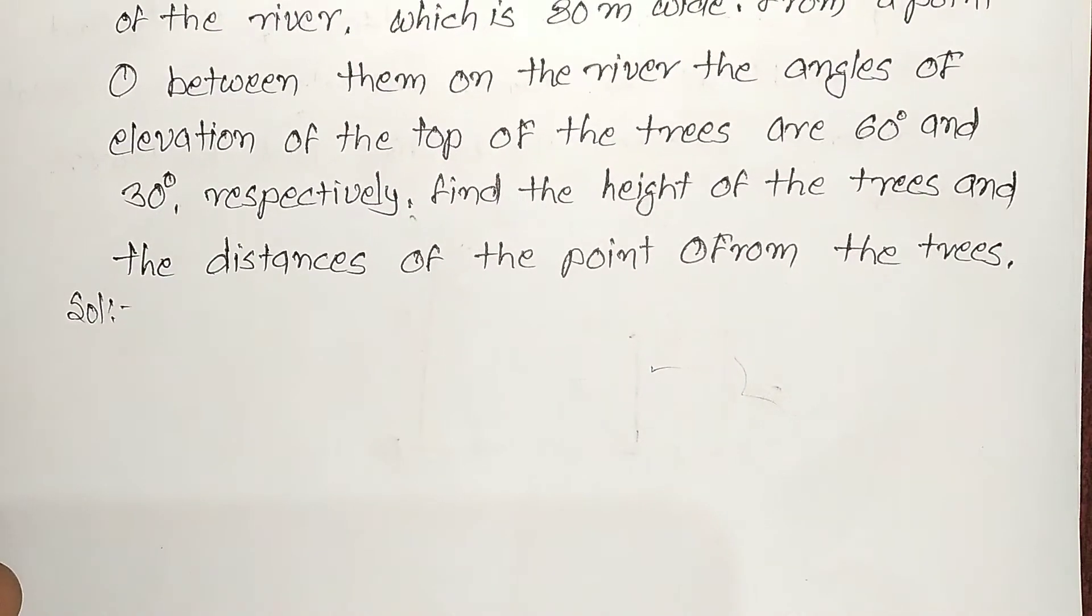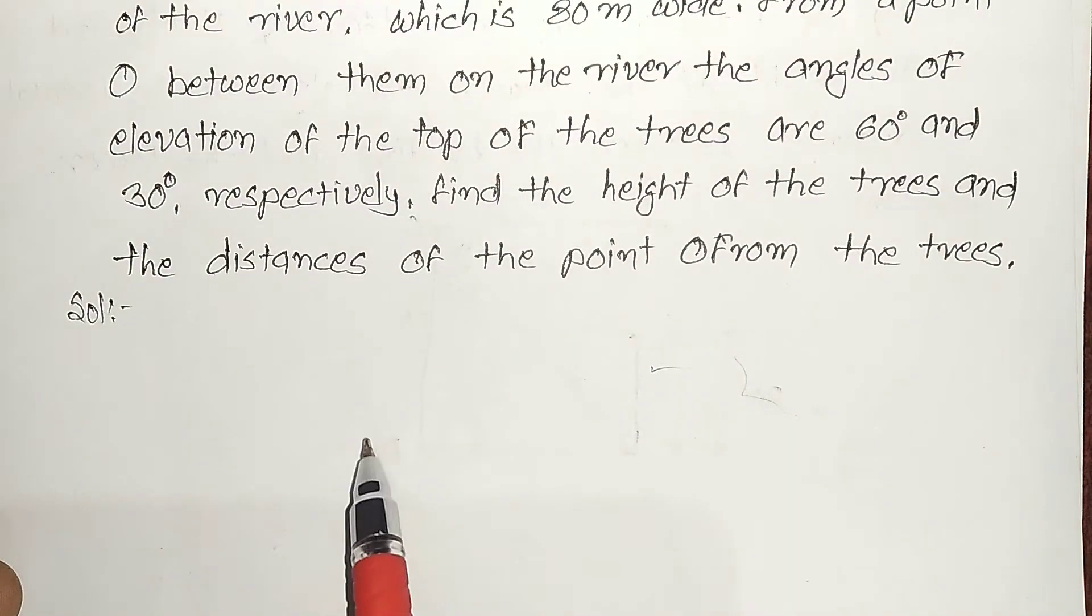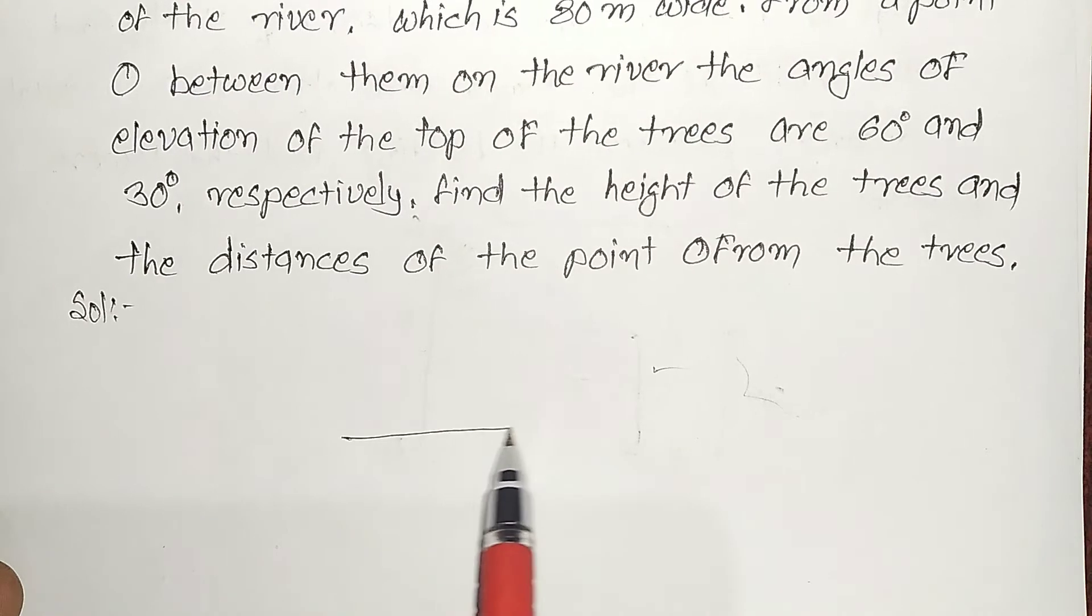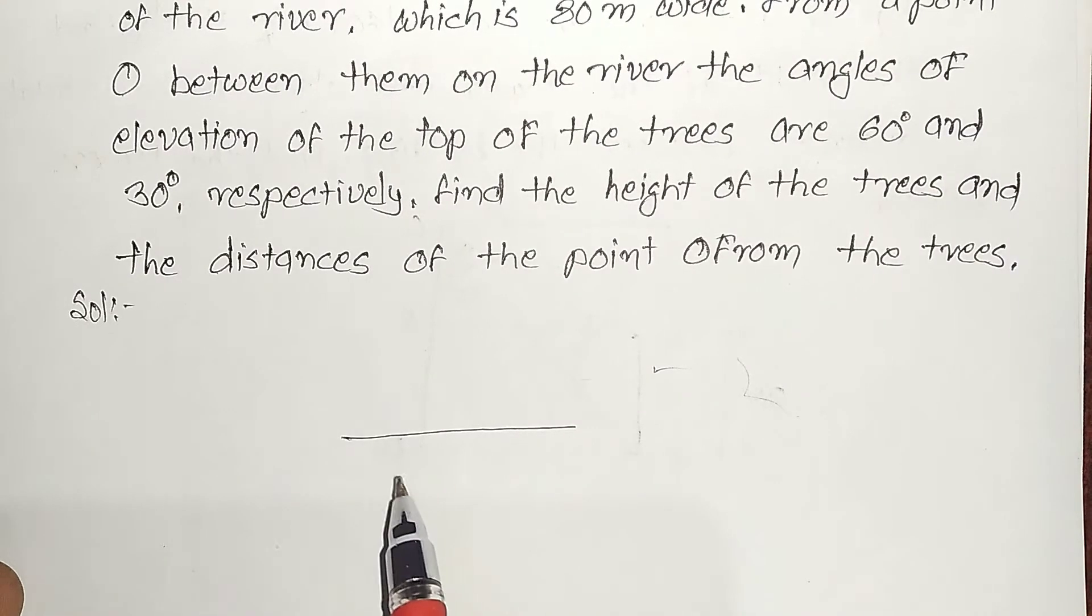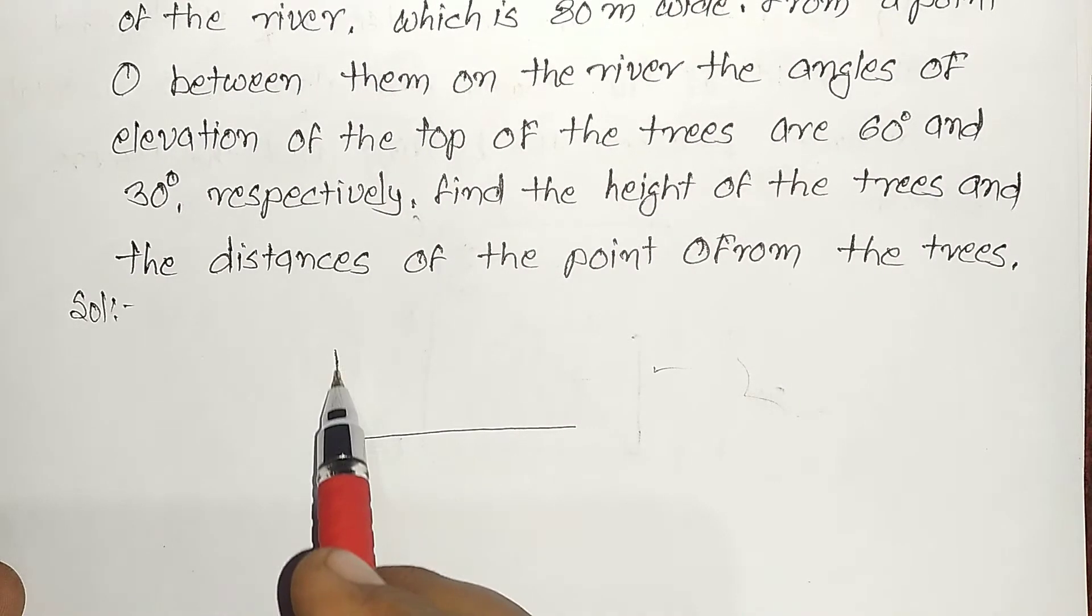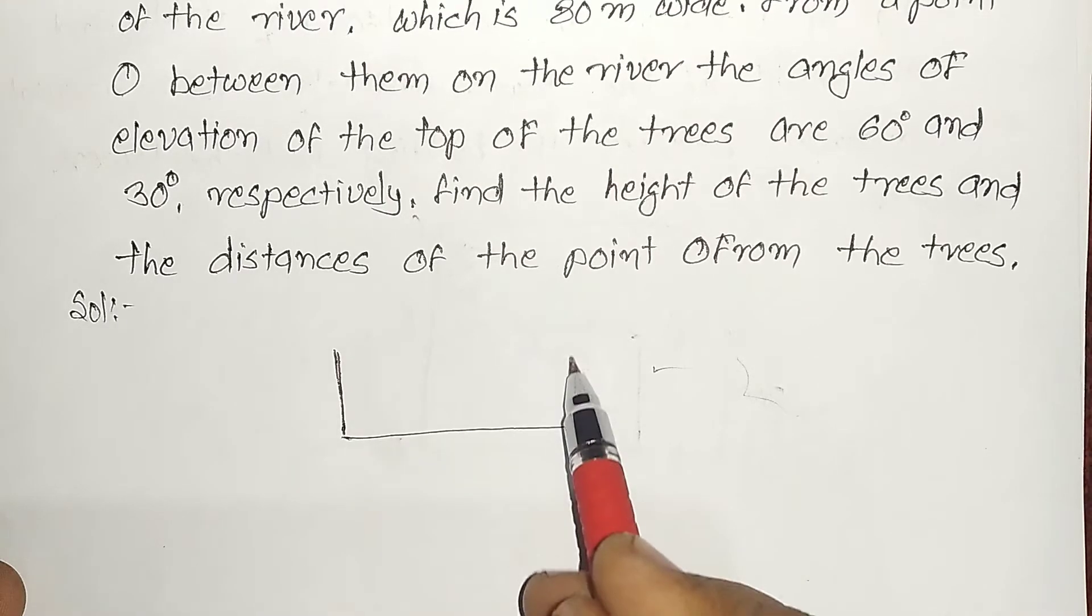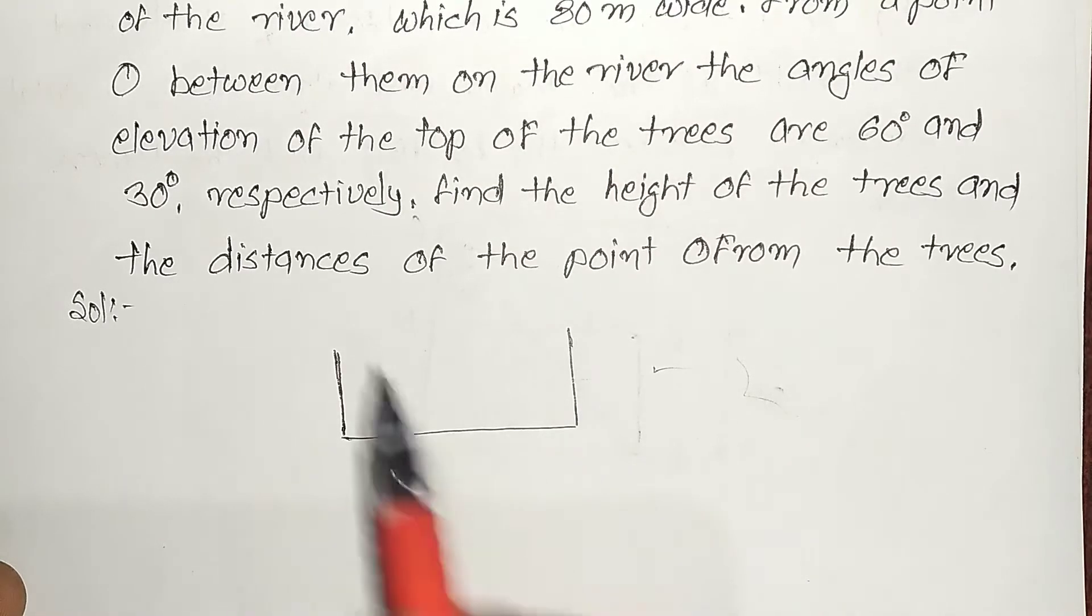First of all, the question is that a river is there. This river has equal height of two palm trees. These two palm trees are on both sides.